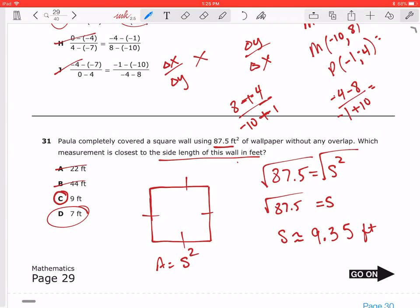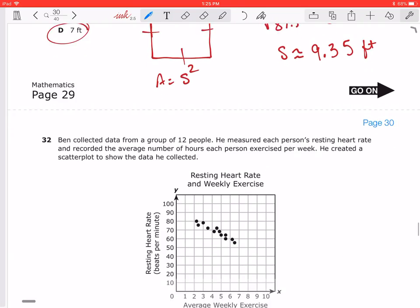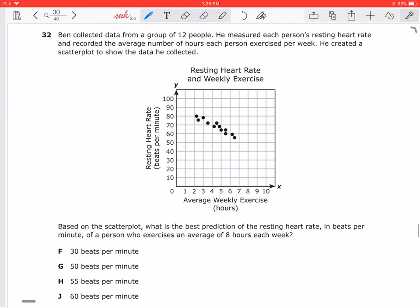That will give us no overlap. Now, if we chose D, D is a possible choice, but it's going to give us some overlap. So we know that because we're talking about the closest side, the closest value. So the only possible answer choice is C.